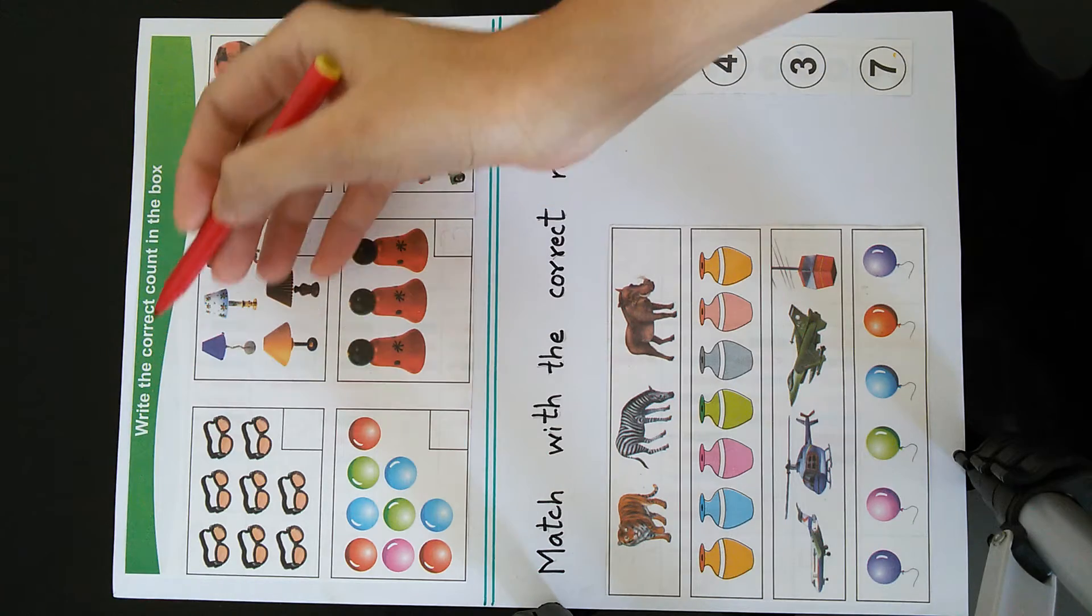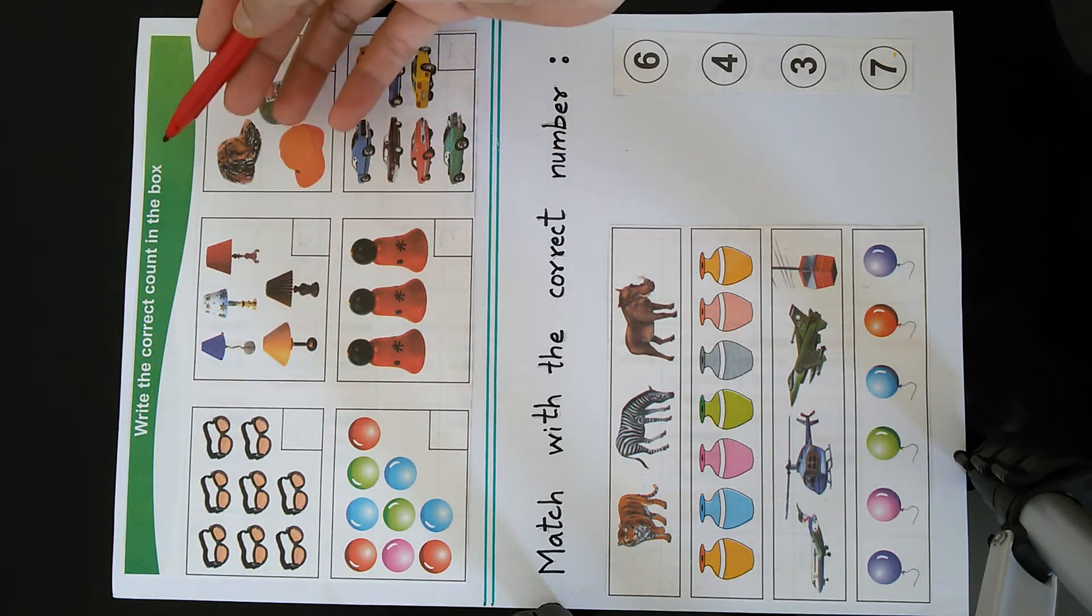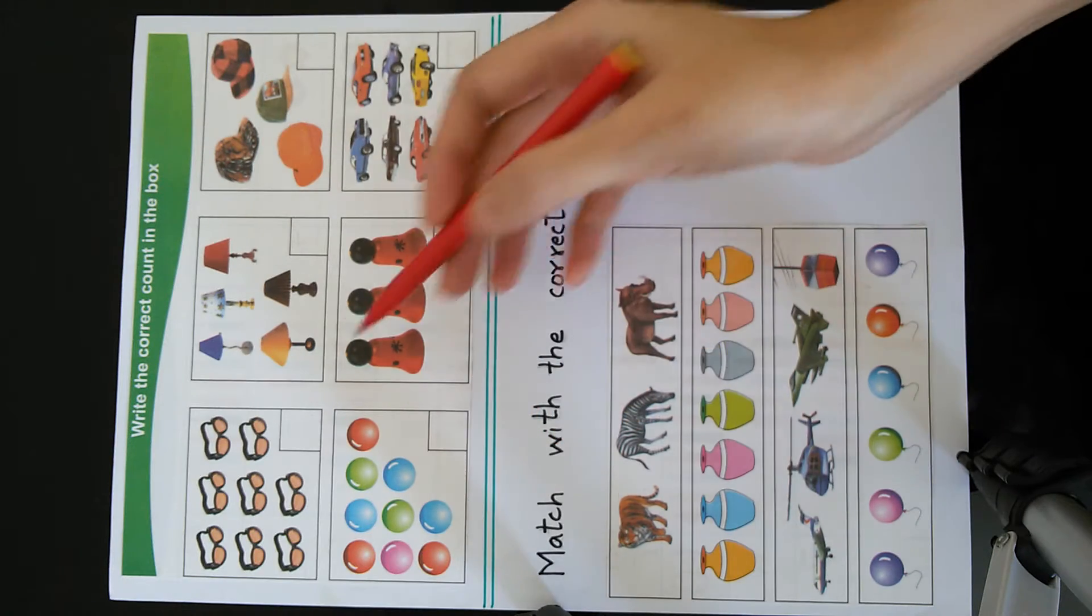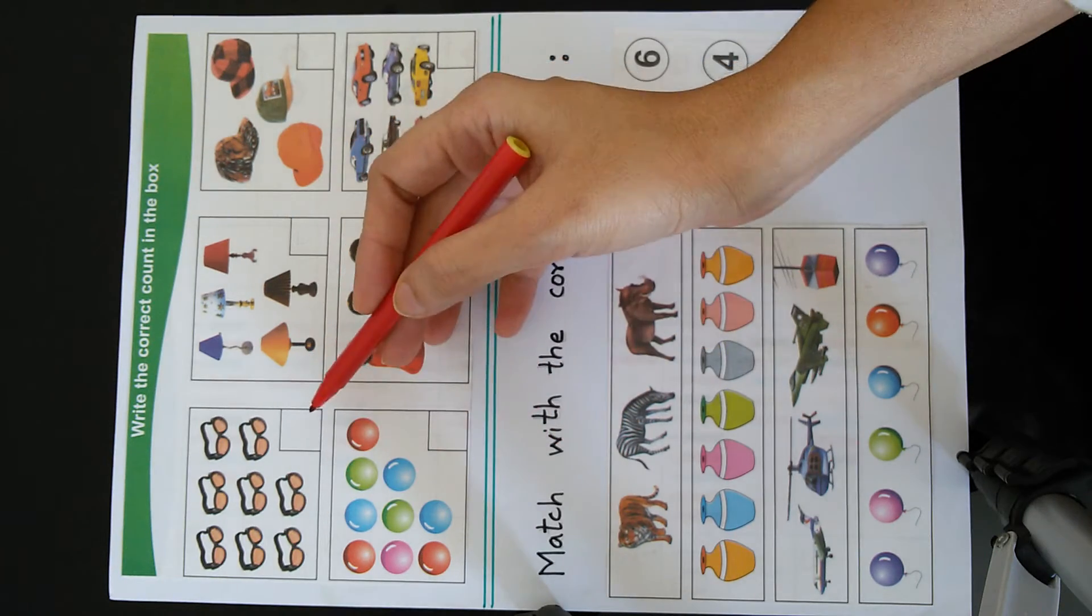Write the correct count in the box. We can see some pictures in the boxes. We will count the pictures and write the number.